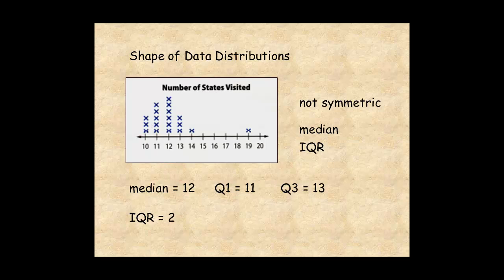There's a cluster of data between 10 and 13 states. There's a gap between 15 and 18. And there's a peak at 12 states.